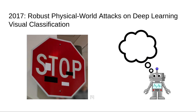In 2017, we figured out we can also use this on stop signs. We can put weird stickers on stop signs, and then our machine learning system thinks they are something different. In this case, we can make it look like any other traffic sign we want, because the labels don't really matter.